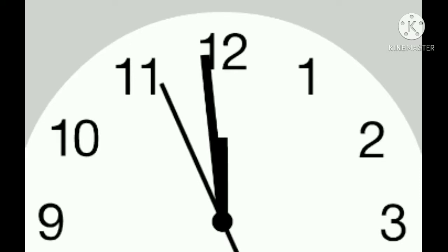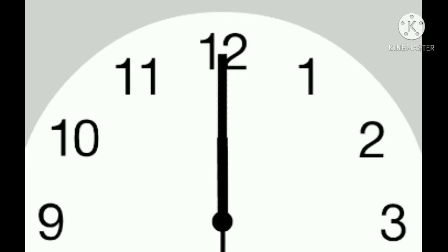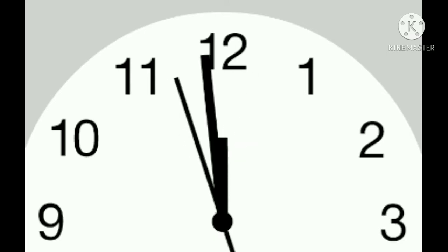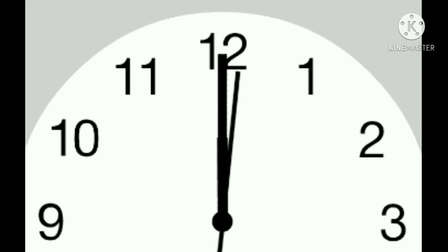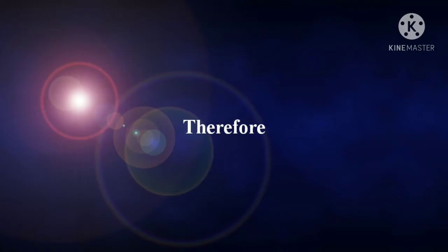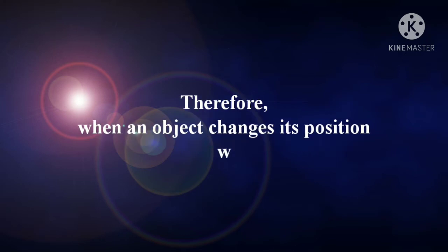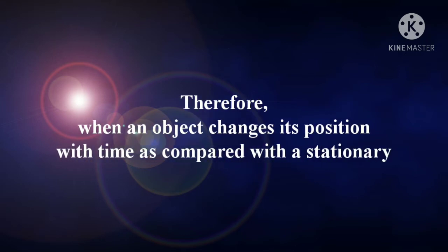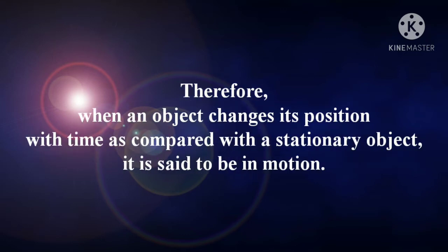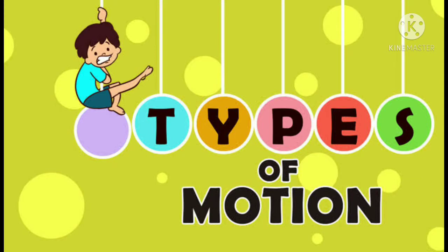The second hand of the watch can be seen moving, isn't it? The minute hand and the hour hand do not move quickly, but still there is a little bit of motion. Therefore, when an object changes its position with time as compared to a stationary object, it is said to be in motion.